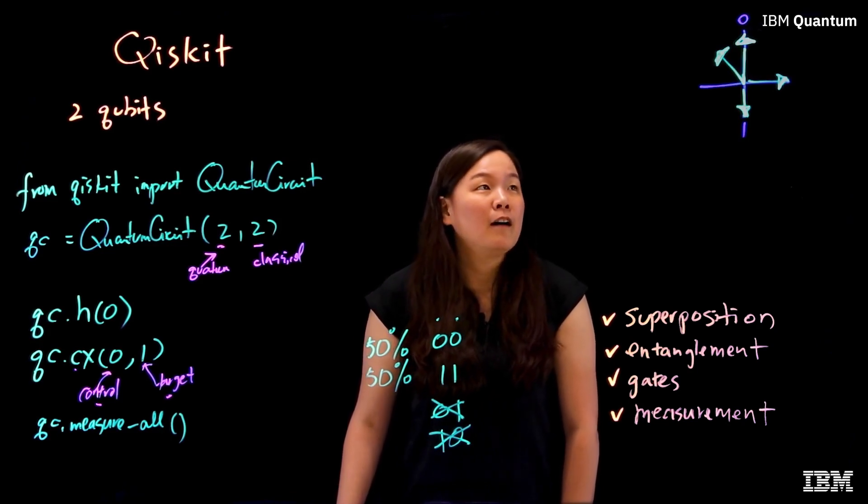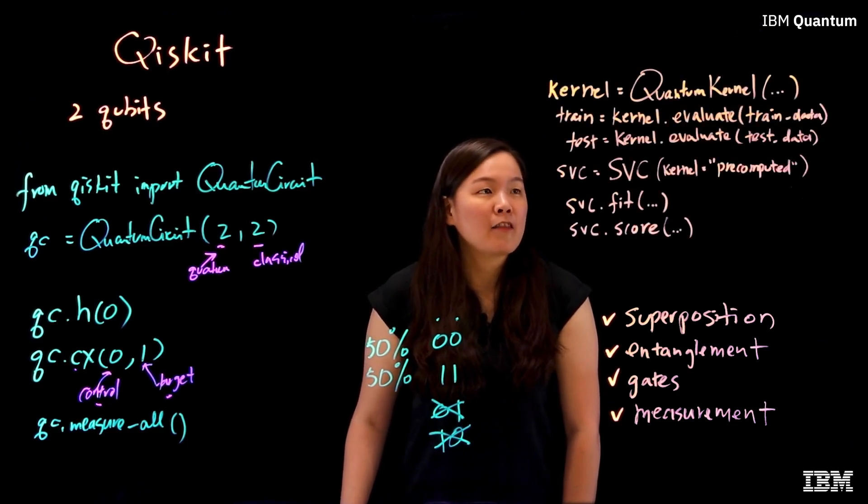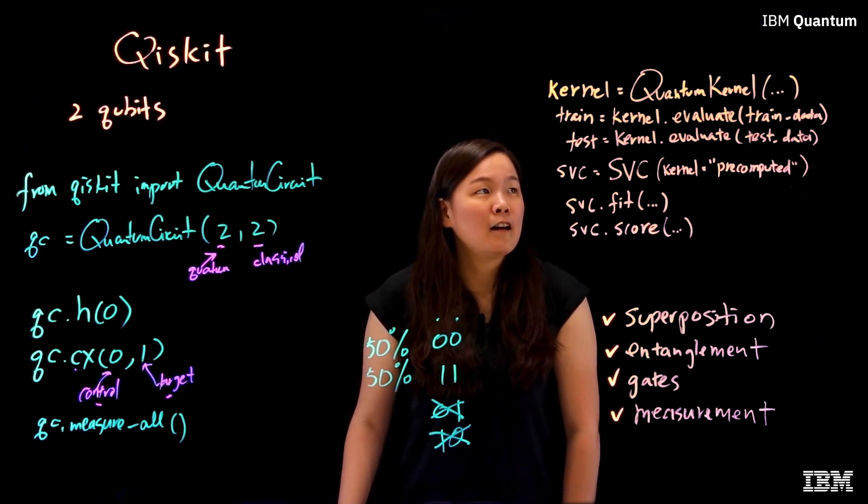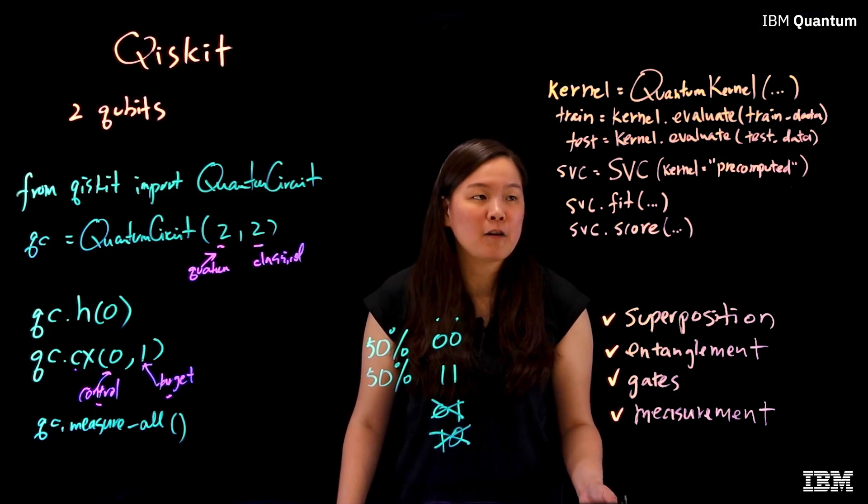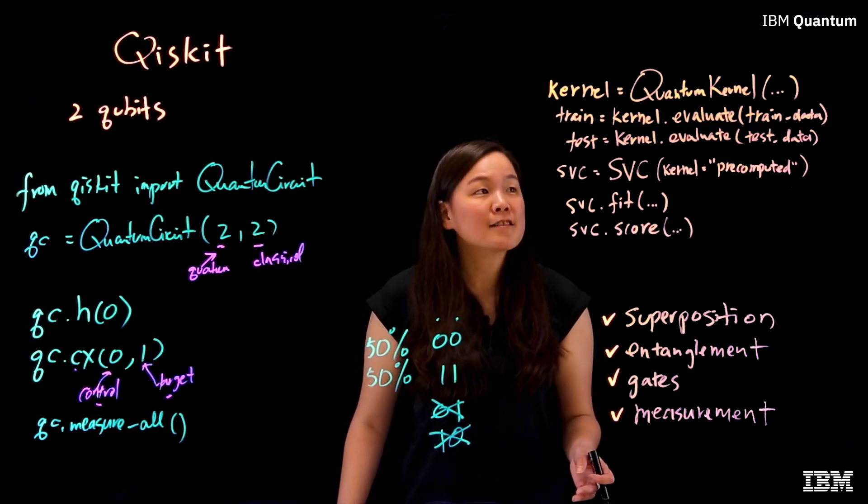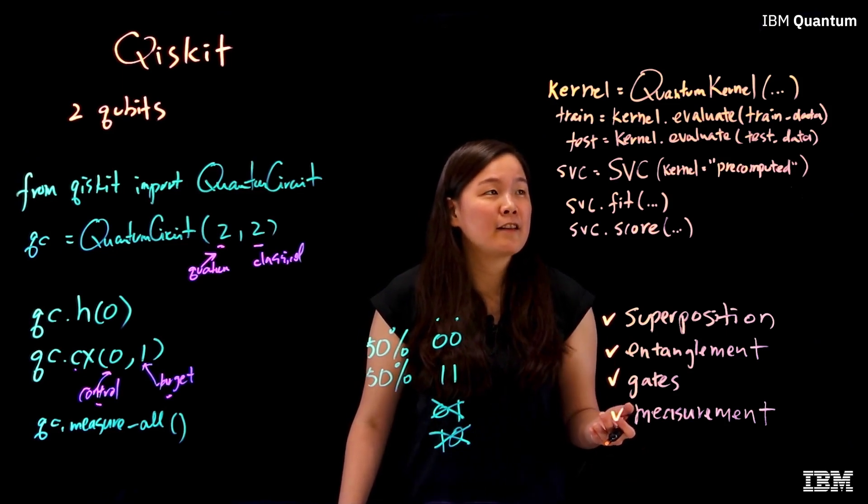For example, Qiskit has a package called Qiskit Machine Learning that has a number of preview classes. You can take a quantum kernel class, use it to train and test data. You can then take this trained quantum kernel and pass it into a classical algorithm, such as the support vector classification from scikit-learn. Then it can accelerate your classical application.